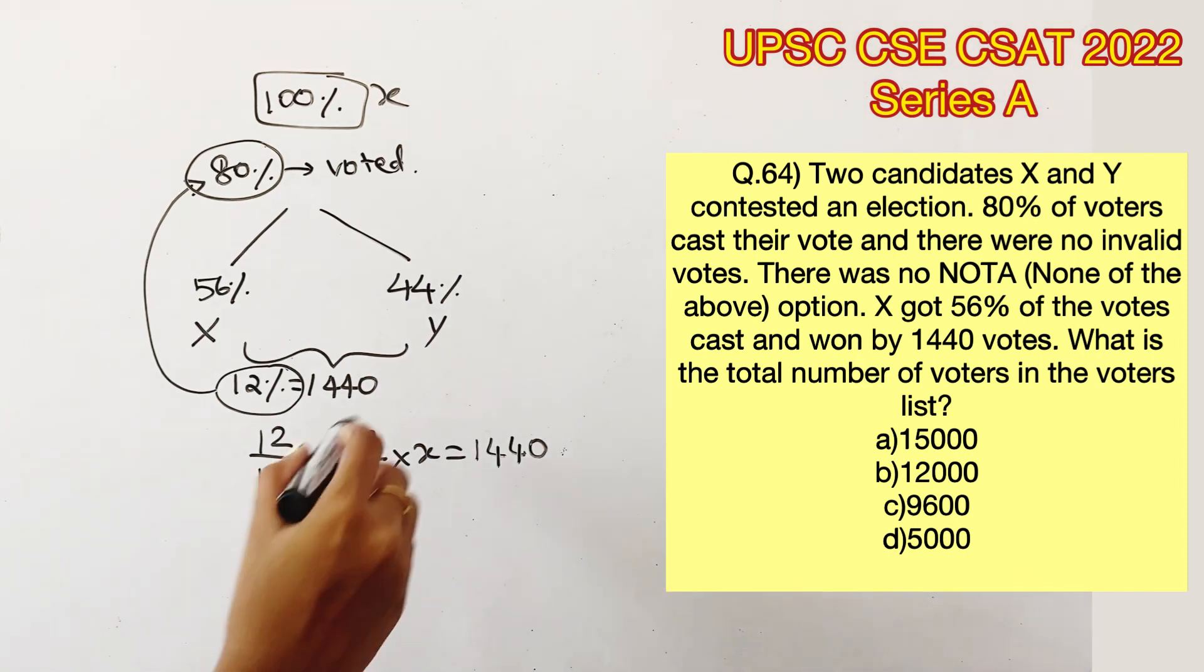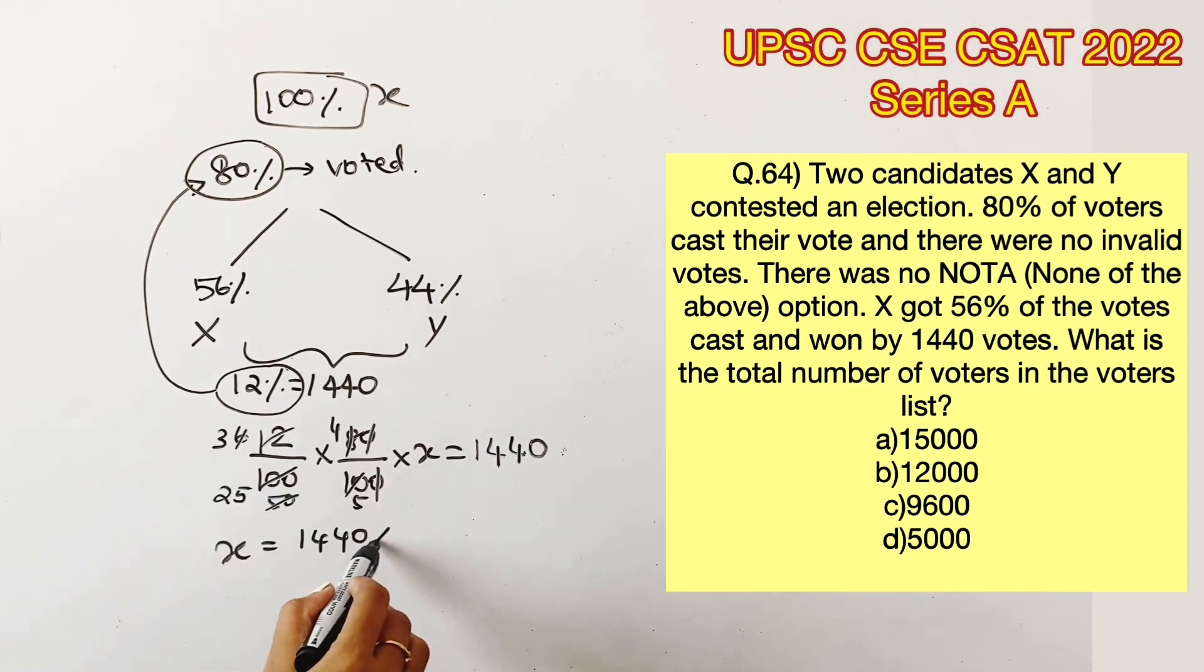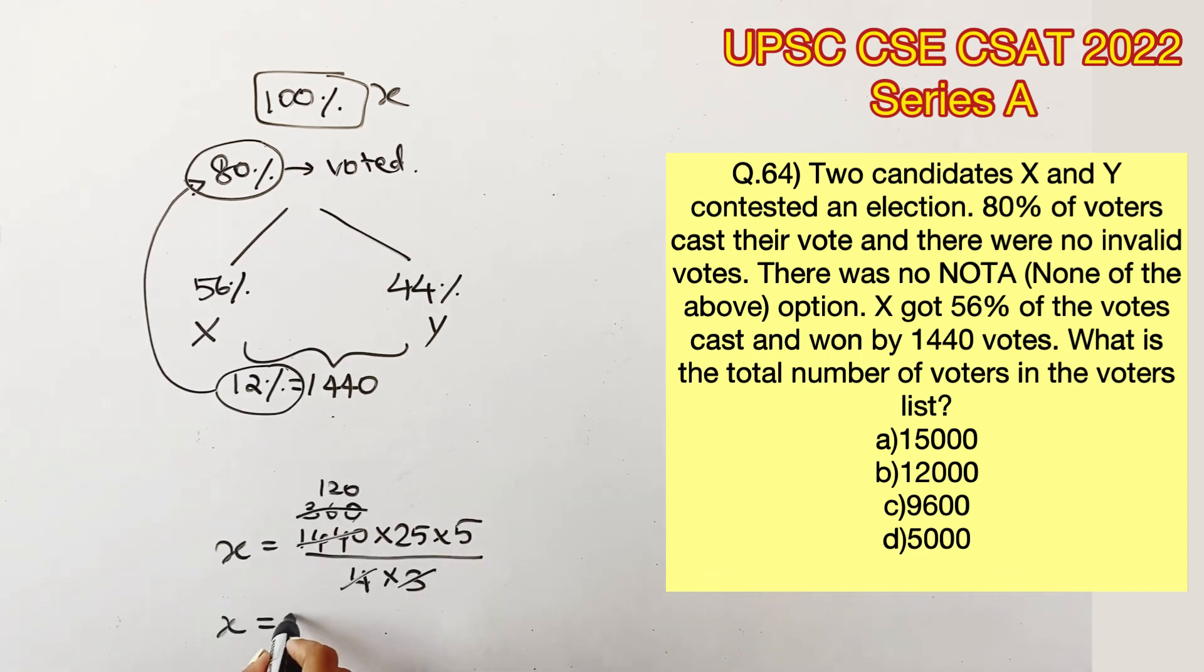Now let's solve for X. X is equal to 1440 into 25 into 5 divided by 4 into 3. This will give us the answer X is equal to 15,000.